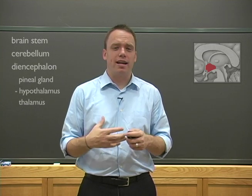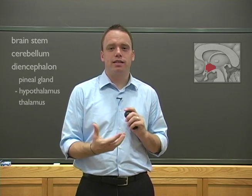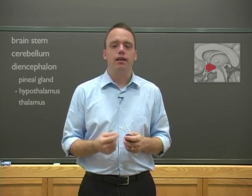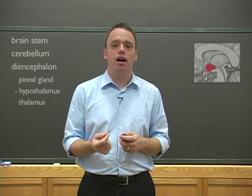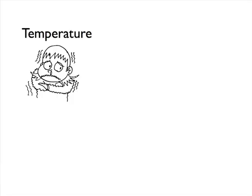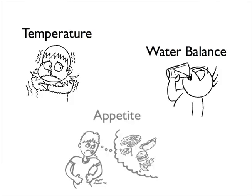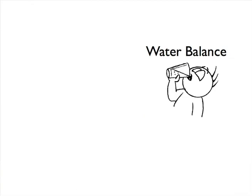which is a technical term for that dynamic balance between the organism and their environment. Now the hypothalamus is involved in homeostasis through the regulation of three functions, body temperature, water balance, and appetite. Let's begin with water balance.